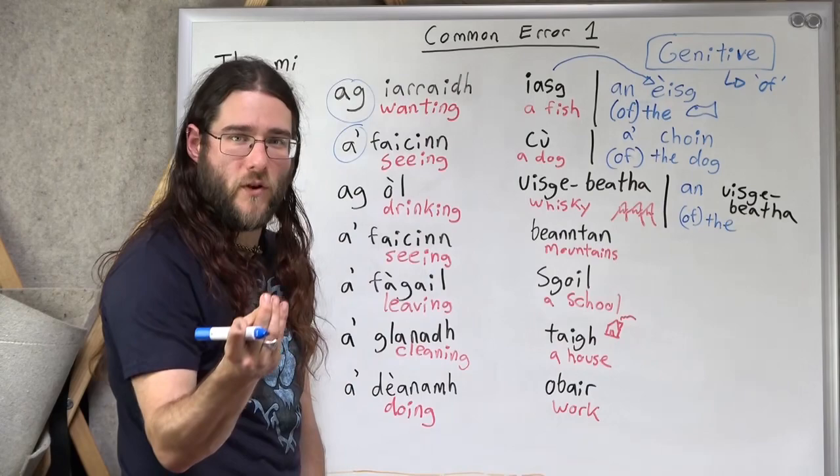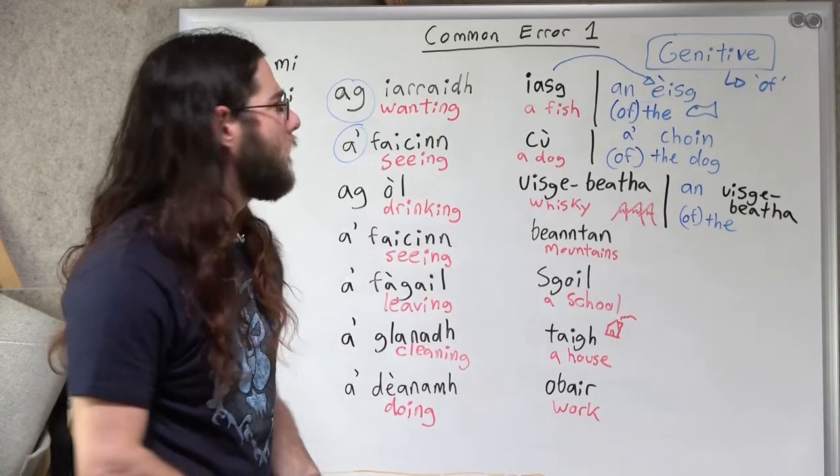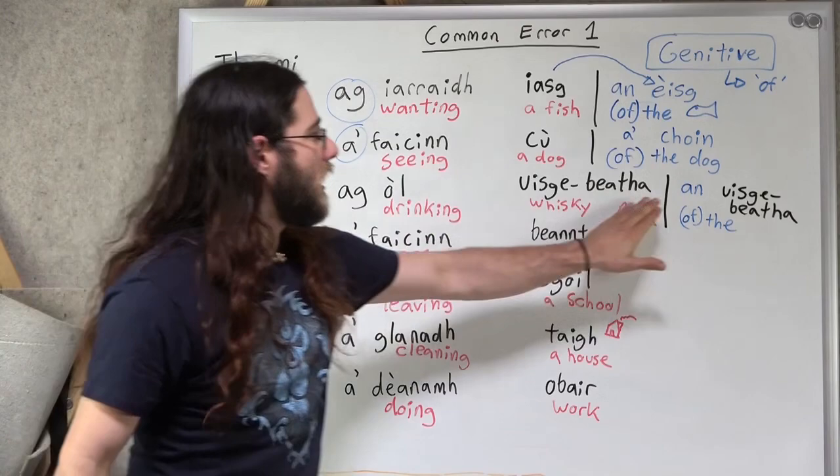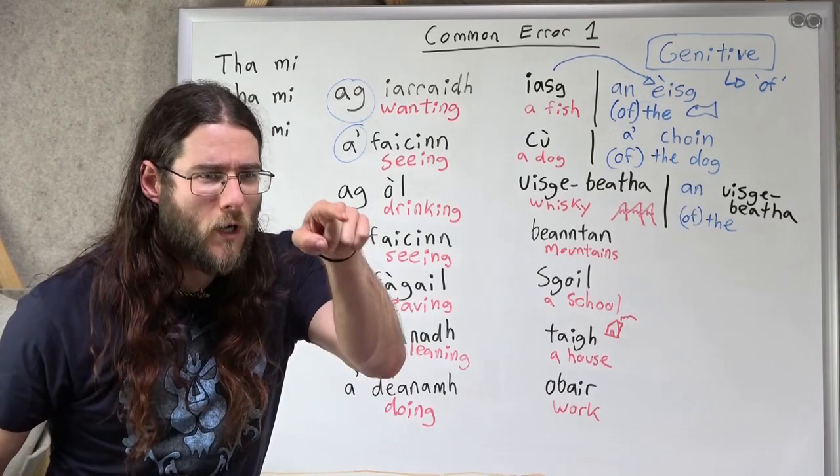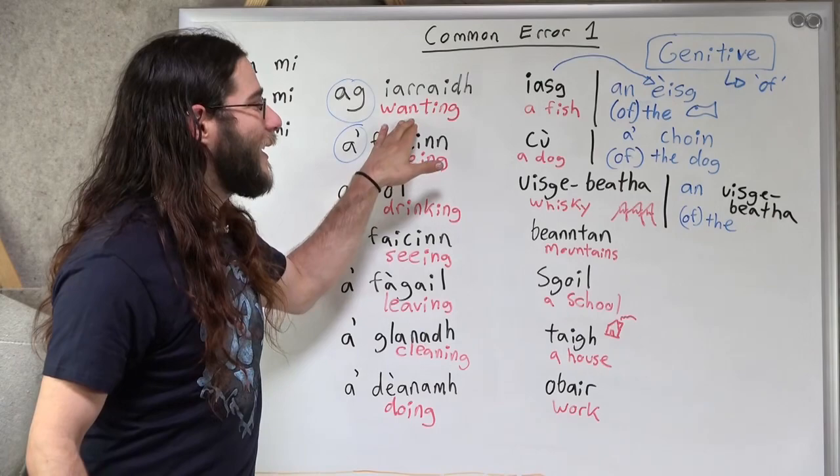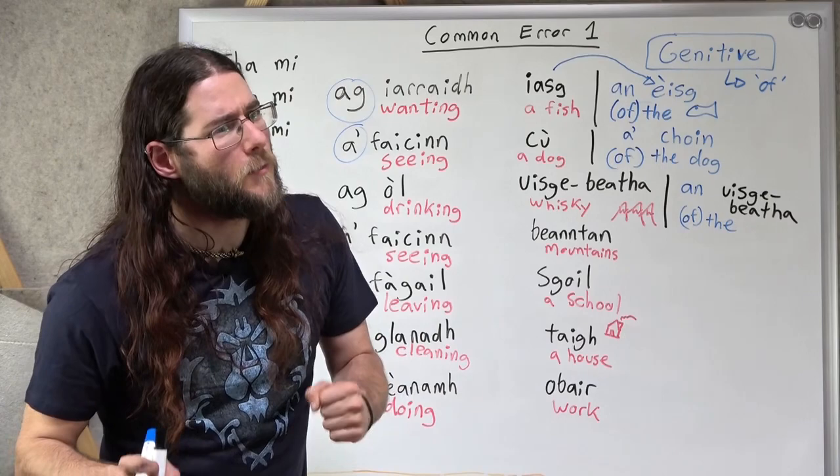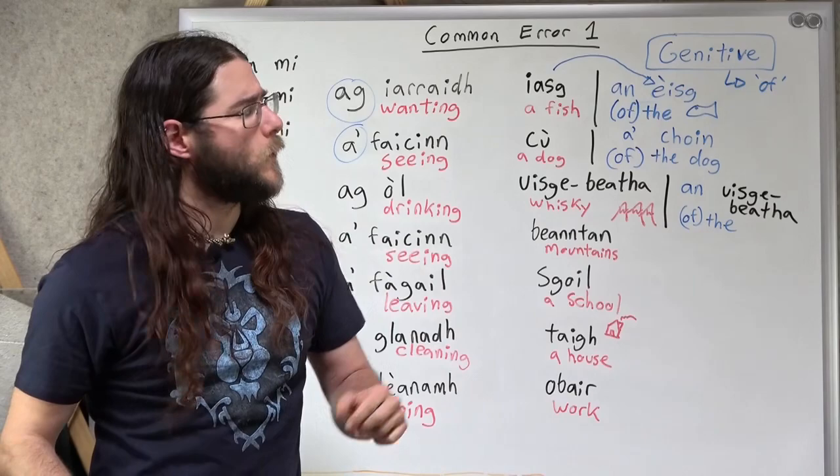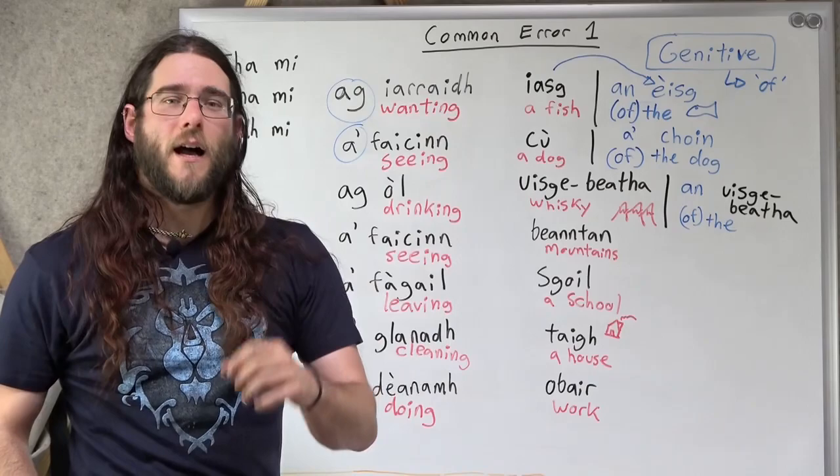Ag òl an uisge-beatha. Drinking of the whiskey. Tha mi ag òl an uisge-beatha. Oh, we could even make a little story here. Tha mi ag òl an uisge-beatha. Tha mi ag òl an uisge-beatha. Oh, tha mi ag òl an uisge-beatha. Oh, Laphroaig. Wow.